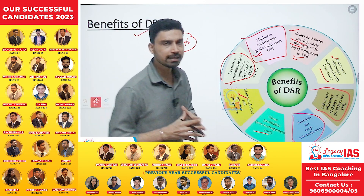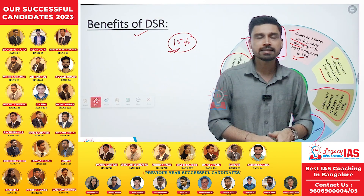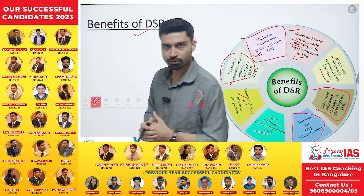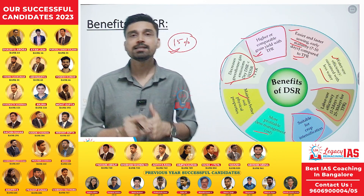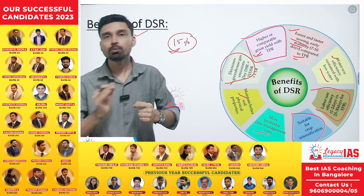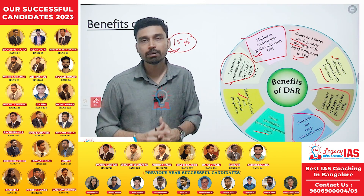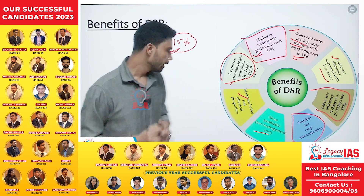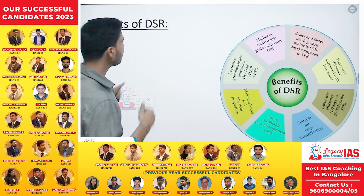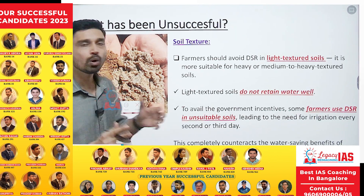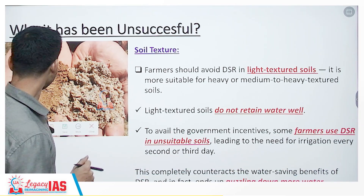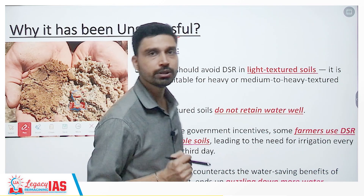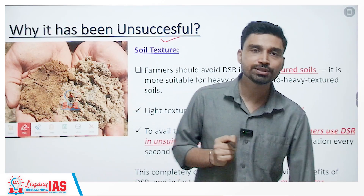Overall, DSR seems much better than the traditional method of rice farming. Despite that, it has not been able to pick up pace or get adopted by paddy farmers at the rate the government or scientists were expecting. So what went wrong? As per research carried out, two main reasons can be highlighted.